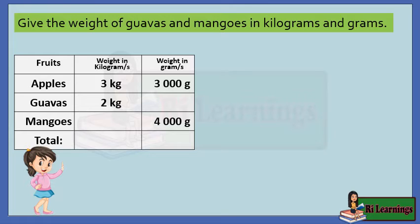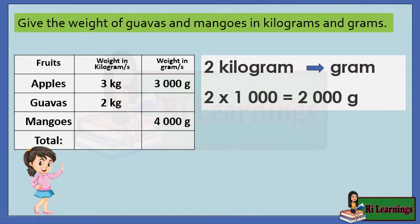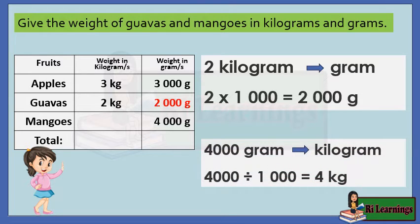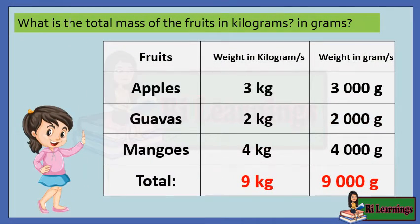Give the weight of guavas and mangoes in kilograms and grams. 2 kilograms of guavas to grams: 2 times 1,000 equals 2,000 grams. 4,000 grams of mangoes to kilograms: 4,000 divided by 1,000 equals 4 kilograms. The total mass — 2 kilograms plus 3 kilograms plus 4 kilograms equals 9 kilograms, which is 9,000 grams.